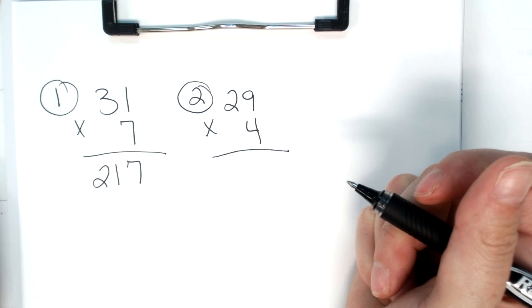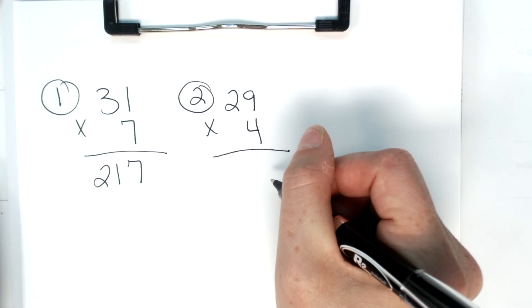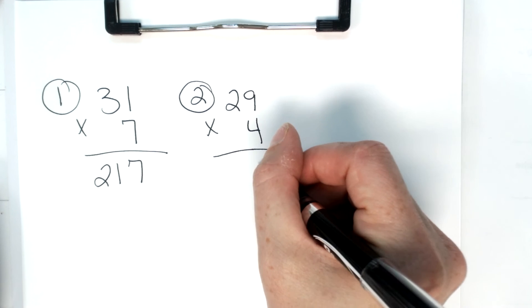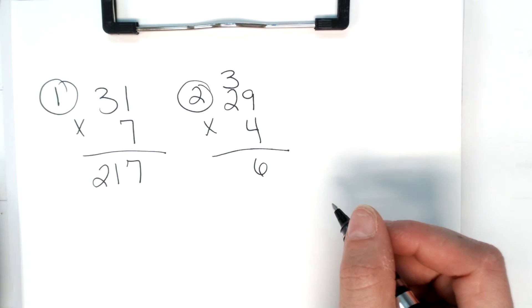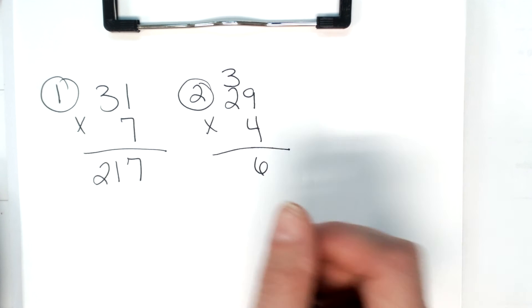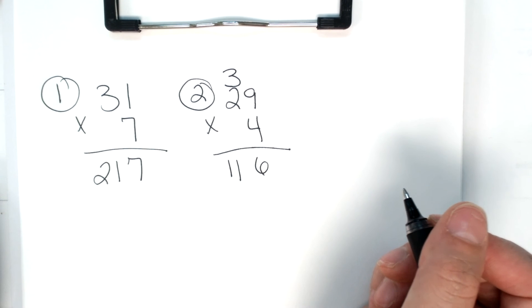29 times 4, what's 4 times 9? 36. 4 times 2 is 8, plus 3 is 11. 29 times 4 is 116.